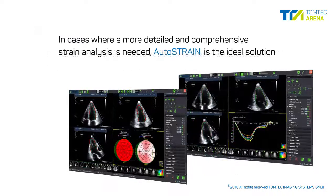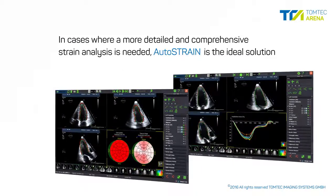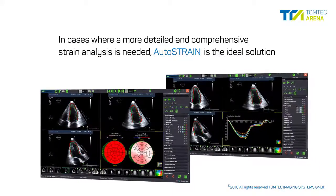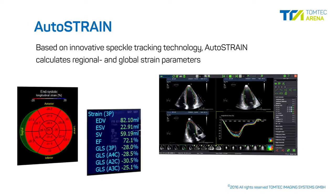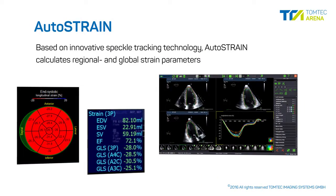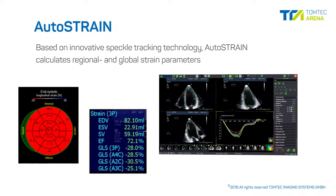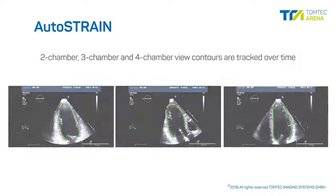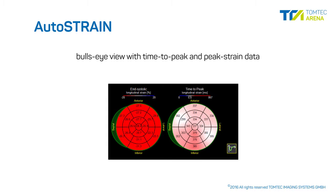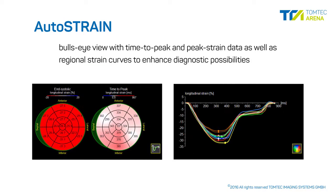In cases where a more detailed and comprehensive strain analysis is needed, Auto-Strain is the ideal solution. Based on innovative speckle tracking technology, Auto-Strain calculates regional and global strain parameters. Contours in the two-chamber, three-chamber, and four-chamber view are automatically detected and tracked over time. Auto-Strain provides a bullseye view with time-to-peak and peak strain data, as well as regional strain curves to enhance diagnostic possibilities in cardio-oncology.